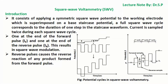Reverse pulses cause the reverse reaction of any product formed from the forward pulse. The figure shown here illustrates that SWV is a form of linear potential sweep voltammetry that uses a combined square wave and staircase potential applied to a stationary electrode, and shows the potential cycles in square wave voltammetry.